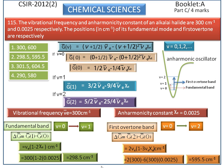Now we have both values: the positions of the fundamental mode and the first overtone band. Checking the given options, the second option has 298.5 and 595.5 per centimeter. So the second option is the correct answer.